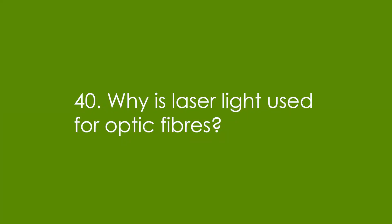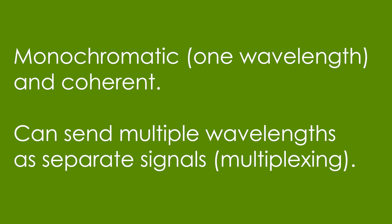40. Why is laser light used for optic fibres? It's because it's monochromatic, meaning it's only one wavelength, and we can send several different wavelengths down the optic fibre to get more information through — we call that multiplexing. I hope you found that helpful. If you did, leave a like, and if you want to see a mind map with all of these ideas, click on the card and it'll take you to my quick physics waves in six minutes video.